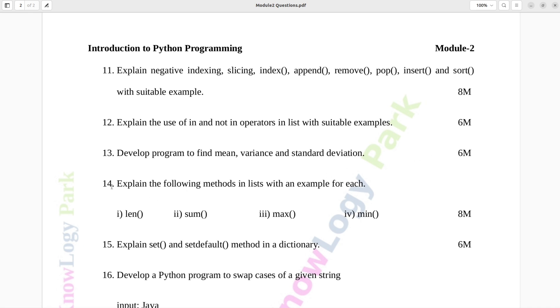Question number 14. Explain the following methods in lists with an example for each. One, len. Two, sum. Three, max. Four, min. Eight marks.